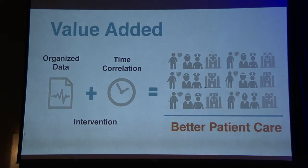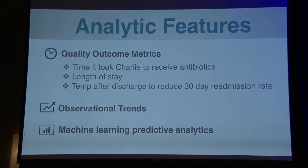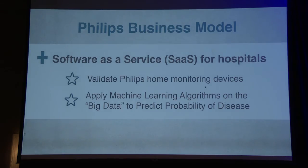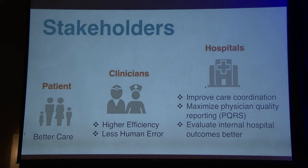Our real value add is organizing data in a different way — correlating it on a time basis and helping the doctor at the point of care. All the information needed to make a decision is pushed directly to everyone on the care team, resulting in better, more efficient, less costly care. The analytics features of our dashboard will help improve hospital quality outcome metrics, such as how long it took Charlie to receive antibiotics. This would also be a software-as-a-service for hospitals, enabling Philips to validate home monitoring after inpatient care, apply machine learning algorithms to diagnosis-associated data, and benefit all stakeholders including patients, clinicians, and hospitals.